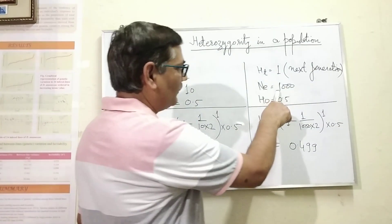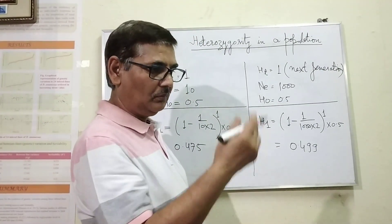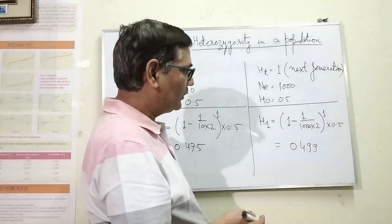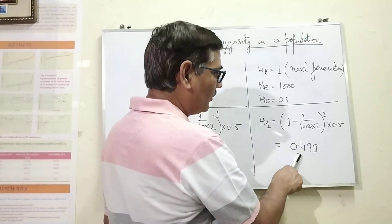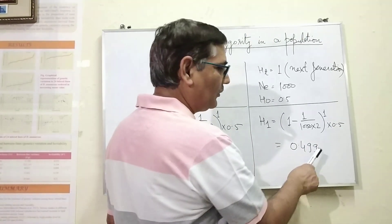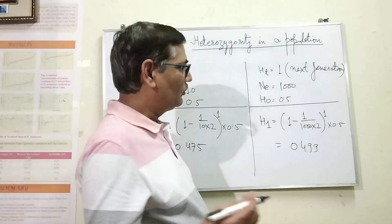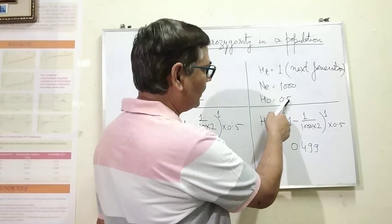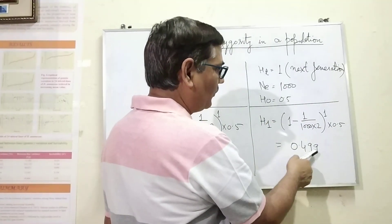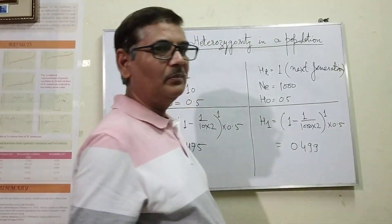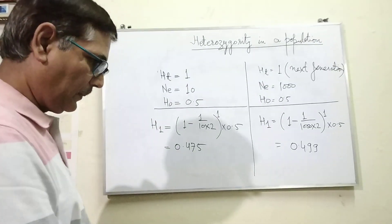Whereas if the number of individuals is more in the population, then you will find that there is very subtle, very little change in the frequency of heterozygotes — it has gone from 0.5 to just 0.499 — a very negligible change.